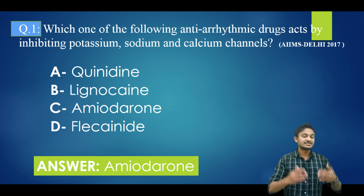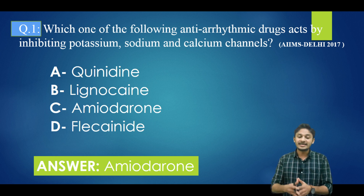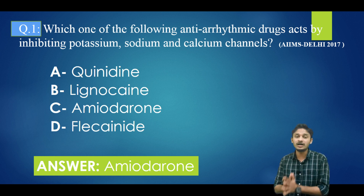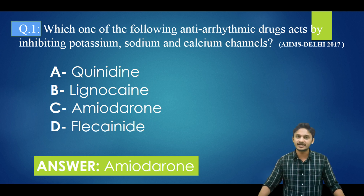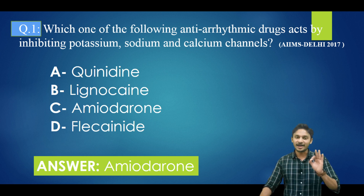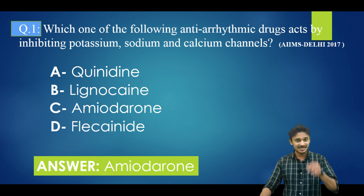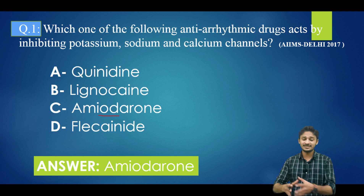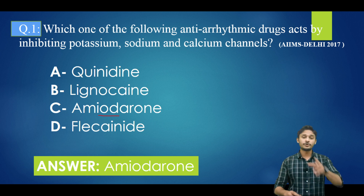What about the other options — quinidine, lignocaine, and flecainide? These three drugs will inhibit only the sodium channel. Amiodarone can inhibit potassium, sodium, and calcium channels. One more important point regarding amiodarone: it contains iodine. So the iodine-containing anti-arrhythmic drug is amiodarone. You can check the name — 'amiodarone' — here it has 'iod', which represents iodine.